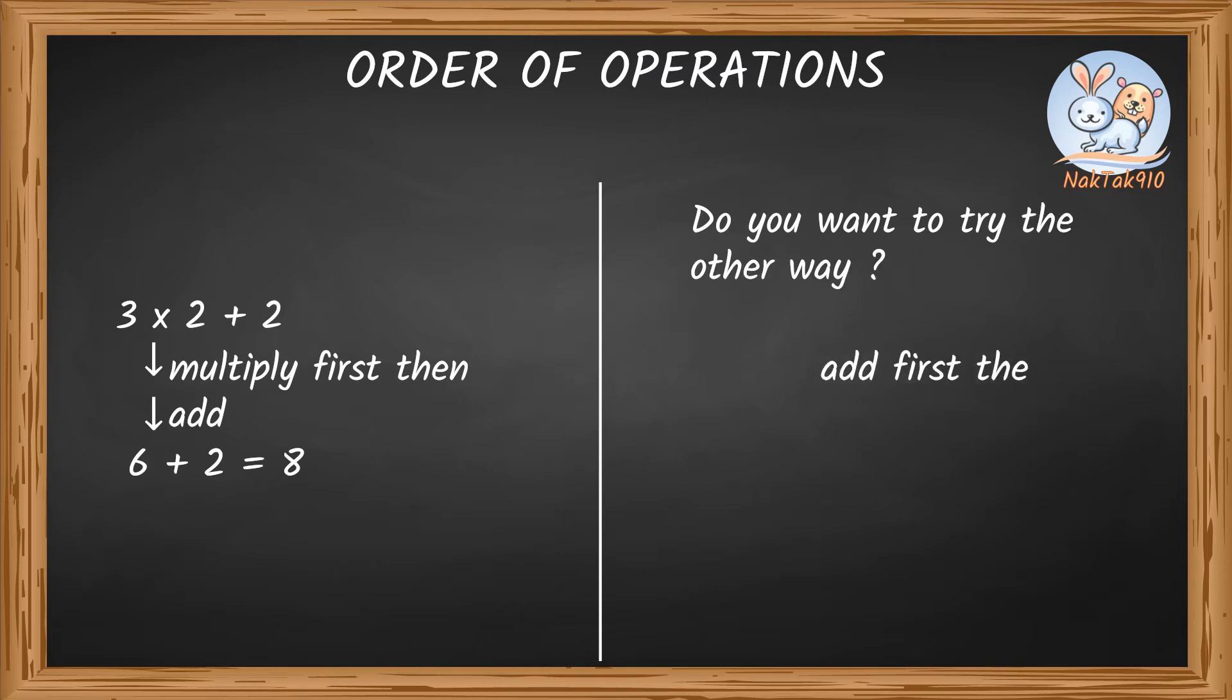I want to add first instead of multiplying because it's easy. 3 times 2 plus 2. 2 plus 2 equals 4. 3 times 4 equals 12.